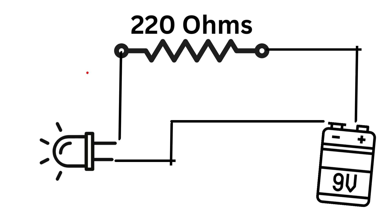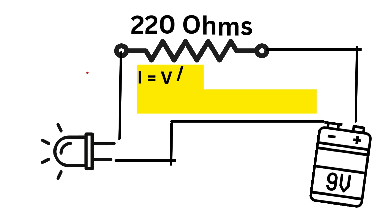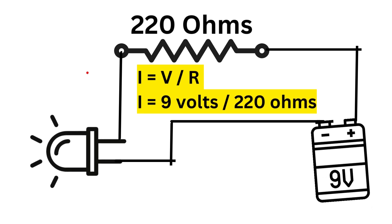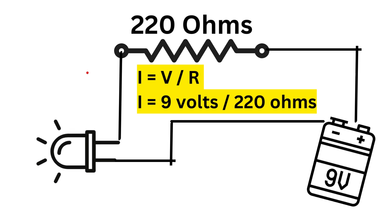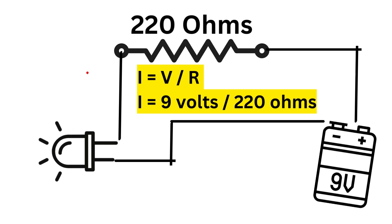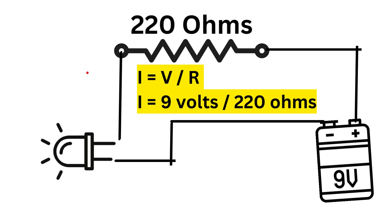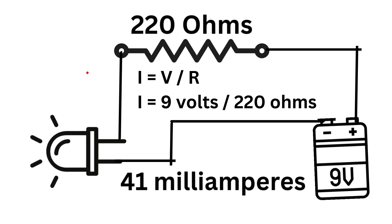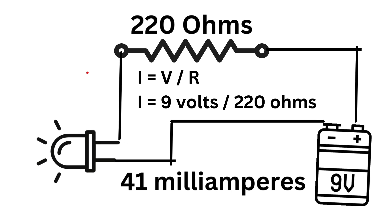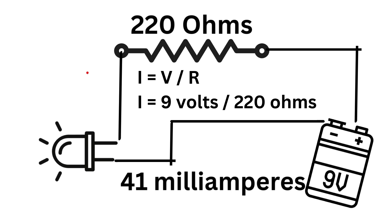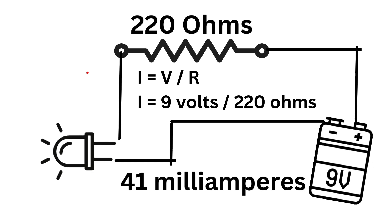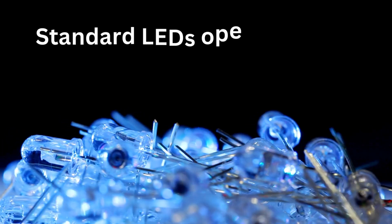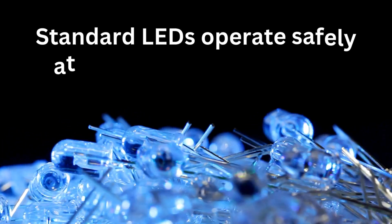To find the current I, we rearrange the equation: I = V / R. I = 9 volts / 220 ohms. Calculating this gives us approximately 0.041 amperes, or 41 milliamperes. This is the current that will flow through our LED. Most standard LEDs operate safely at around 20 milliamperes.